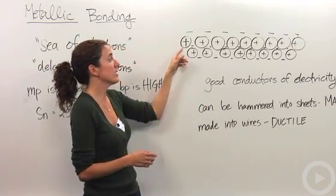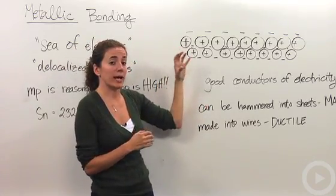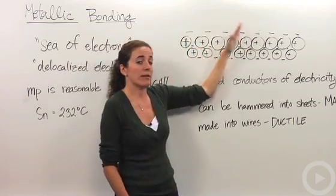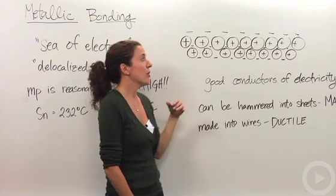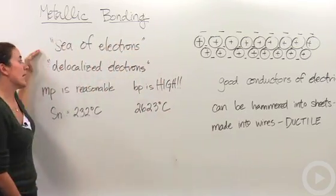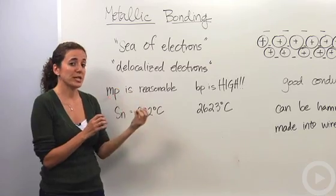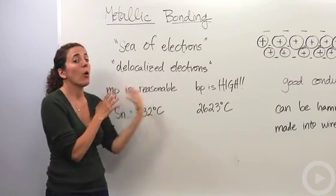What actually happens is they lose the identity of those electrons and the positively charged nuclei are then sharing their electrons amongst everybody. So that's where you've heard the term sea of electrons and delocalized electrons, because their electrons don't belong to a particular atom, they actually belong to the whole metal.